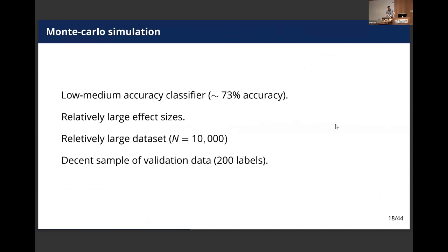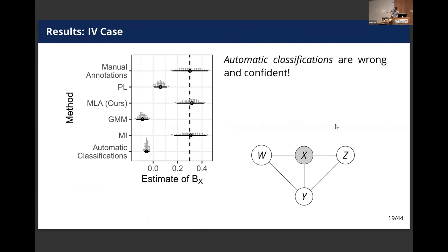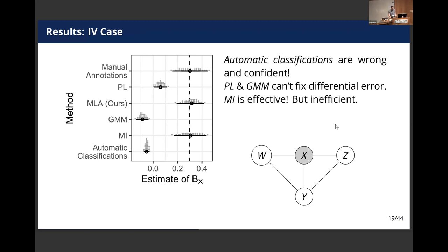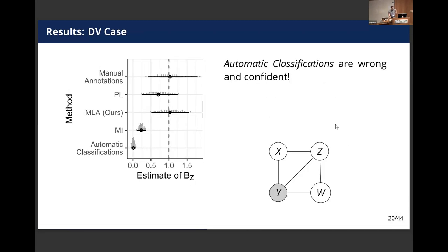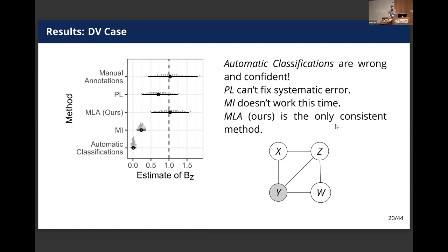The simulations have low-medium accuracy — about 72% — pretty large effect sizes, a relatively large dataset, and about 200 labels of validation data, which is pretty attainable if you're using humans to label text or images. In the IV case, our method gets back out pretty similar estimates to what you get with just manual annotations, and multiple imputation also works, though our method is a little more efficient. The two other methods people in our field have proposed didn't really work because they weren't designed for differential error. In the DV case, our method worked and the other methods didn't. You can see again that automatic classifications can be really misleading, and our method was the only one that was consistent.